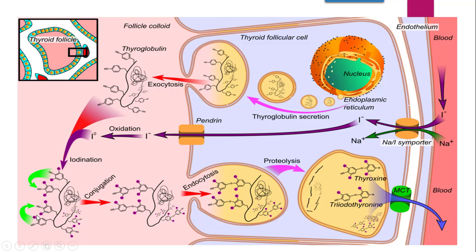After iodination and conjugation occur, the paired tyrosyl residues form T3 and T4. The thyroglobulin then re-enters the cell by endocytosis — as it came out by exocytosis, it re-enters by endocytosis. After re-entering by endocytosis, proteolysis occurs by proteases enzymes, liberating the hormones of interest. The globulin part gets separated from the thyroxine and triiodothyronine.